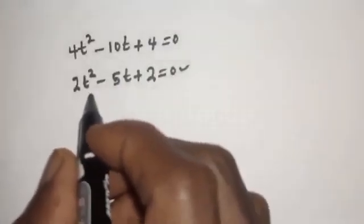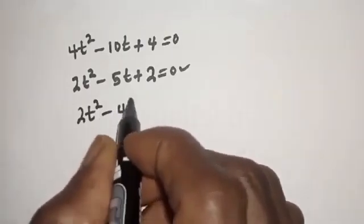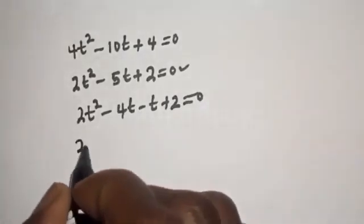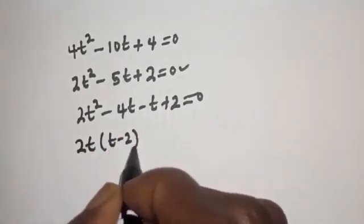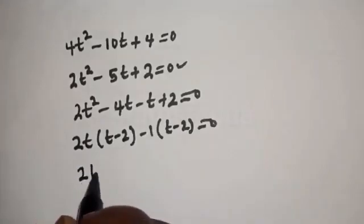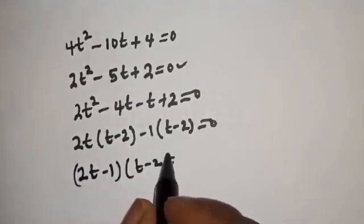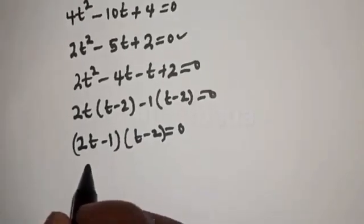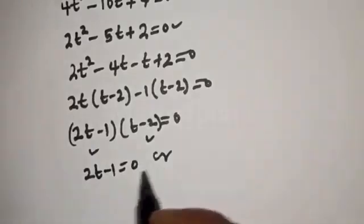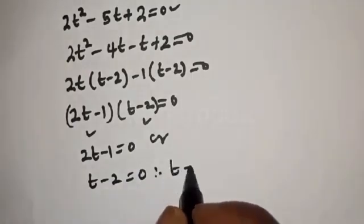We have 2t squared minus 4t minus t plus 2 is equal to 0. Then: 2t(t minus 2) minus 1(t minus 2) is equal to 0, giving (2t minus 1)(t minus 2) is equal to 0. There are two cases: the first case is 2t minus 1 equals 0, or the second case t minus 2 equals 0. From the second case, t is equal to 2.